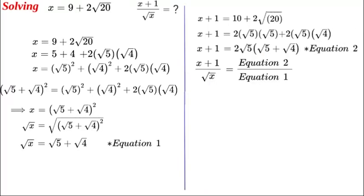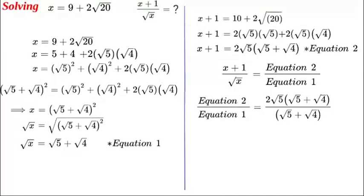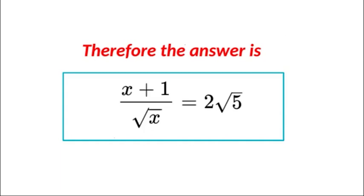We put equations 1 and 2 together as a fraction to get the target expression x plus 1 over the square root of x. We can see a common factor in the numerator and denominator, and we cancel out the square root of 5 plus the square root of 4. Our final answer is: x plus 1 over the square root of x equals 2 times the square root of 5. Hope you enjoyed this video — thank you for watching, don't forget to subscribe, and see you again very soon.